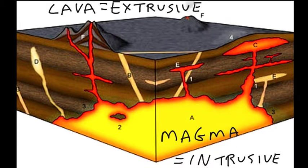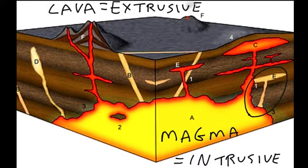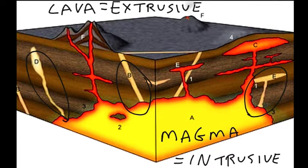So if you form igneous rock intrusively, that would be these examples here where the magma has cooled without having erupted. You've got rock in there that has pierced through the sedimentary layers of what's called country rock — rock that was there to begin with.